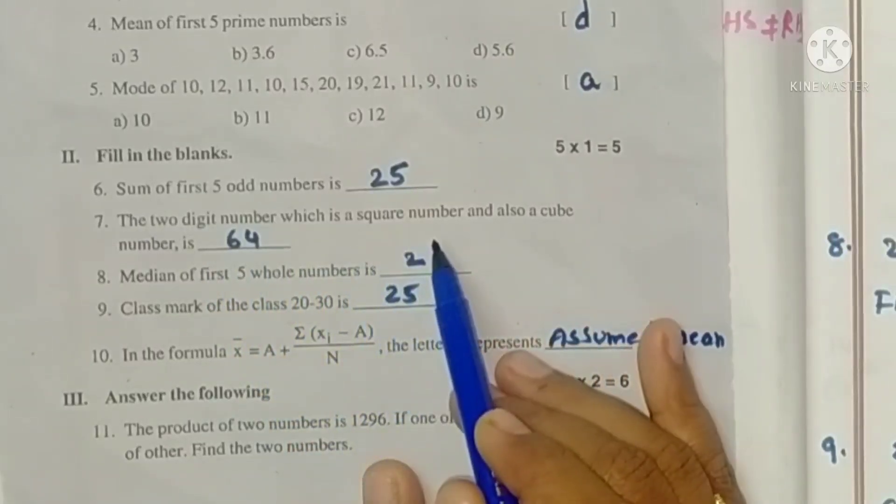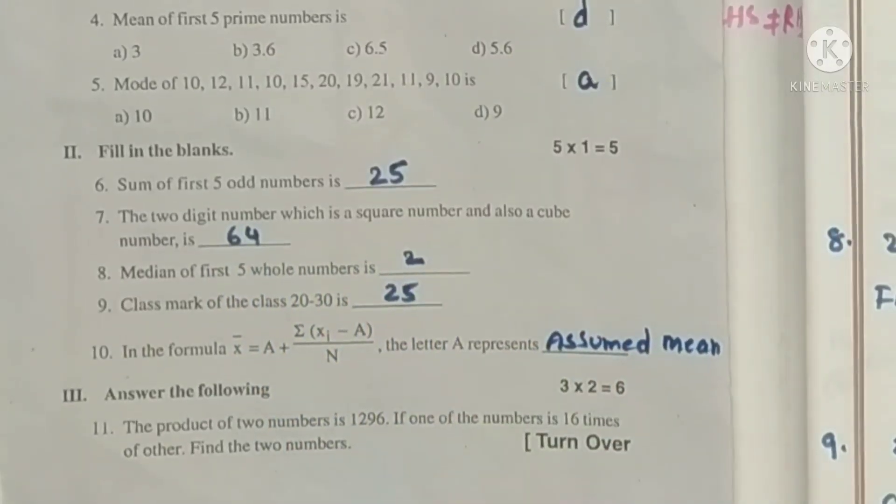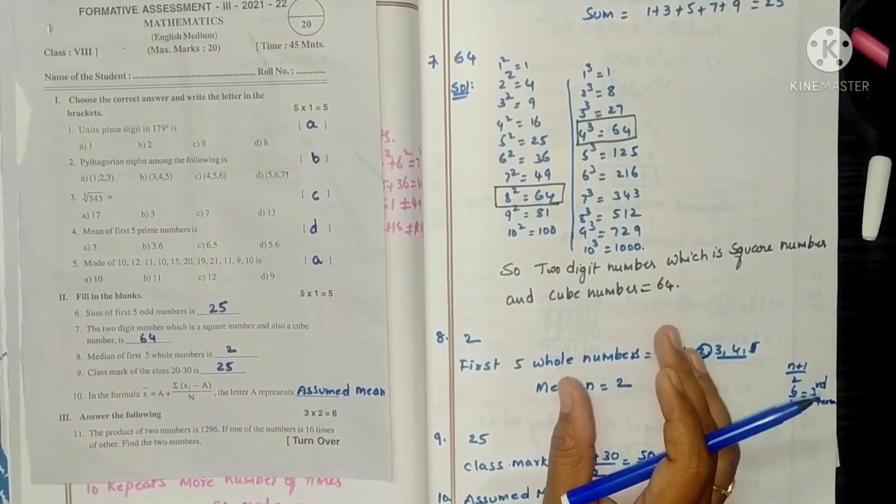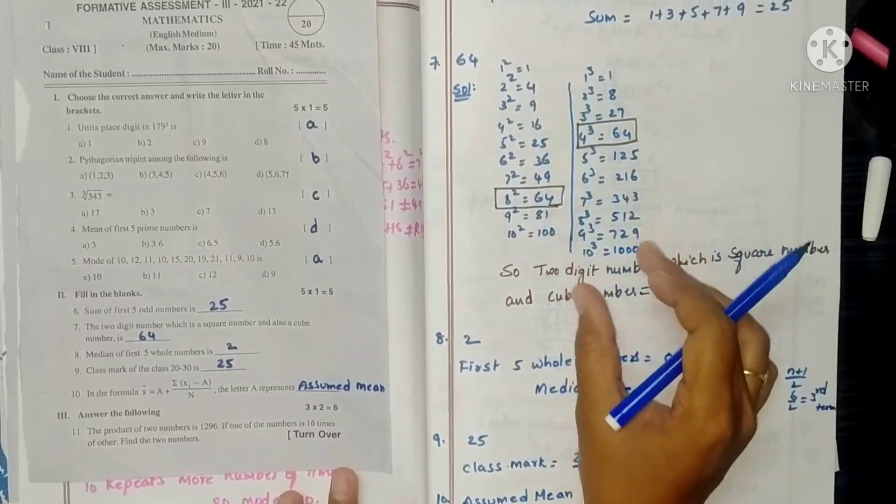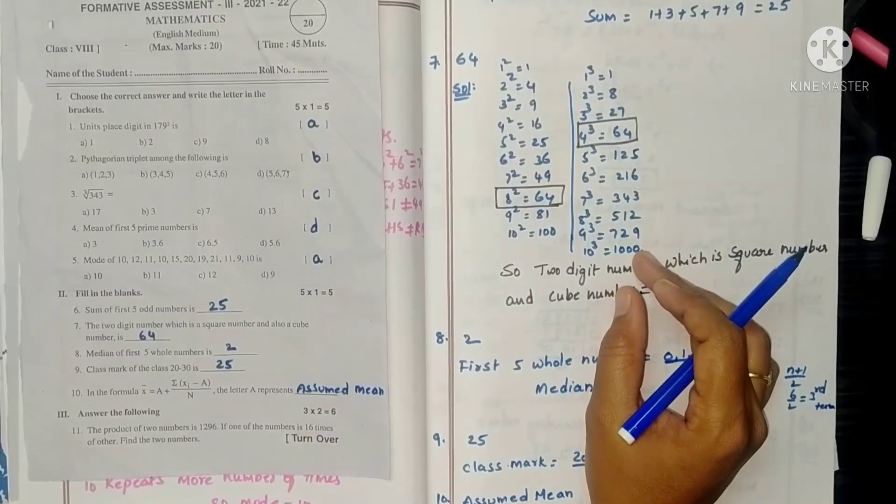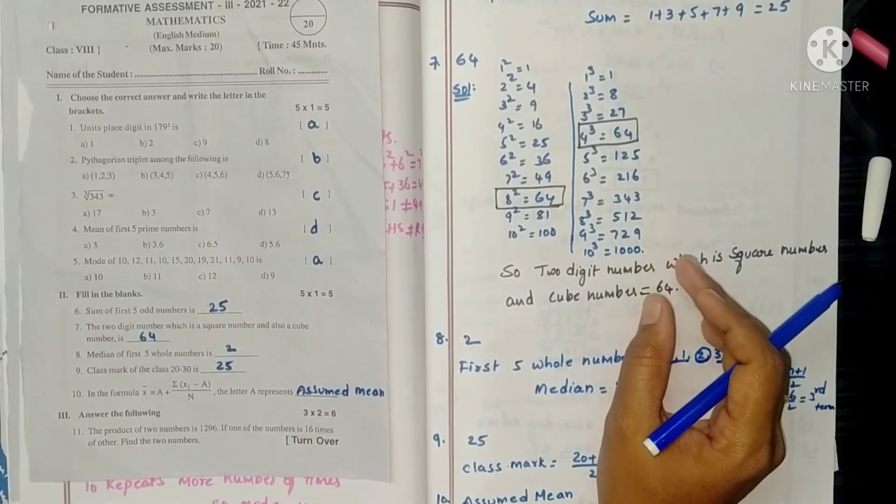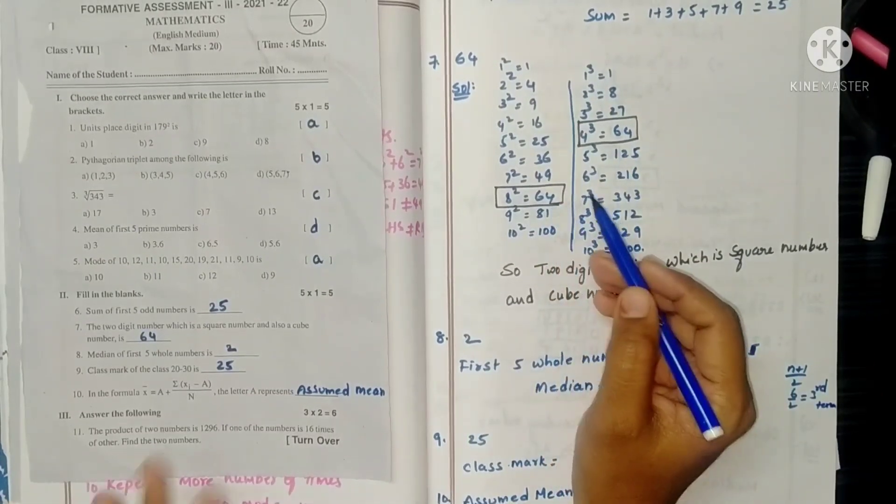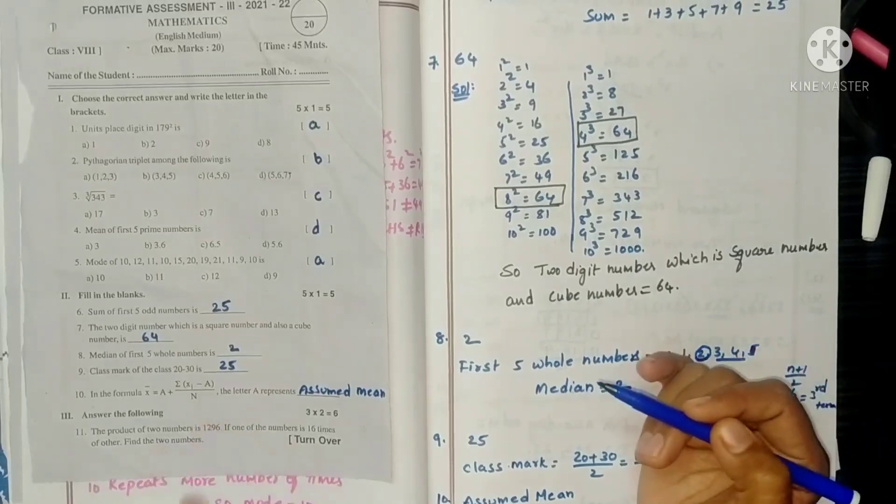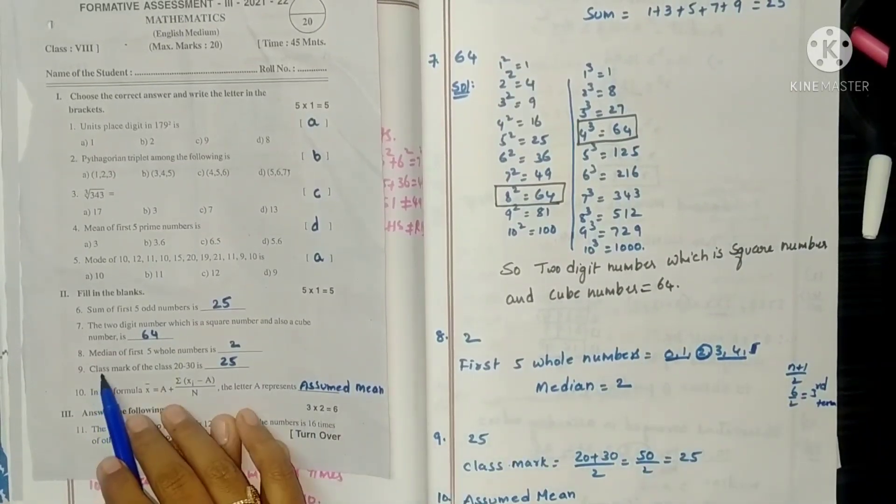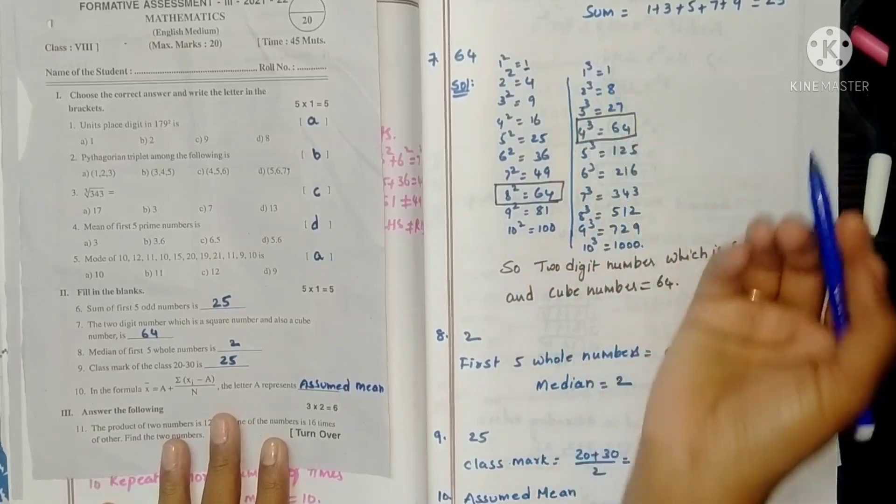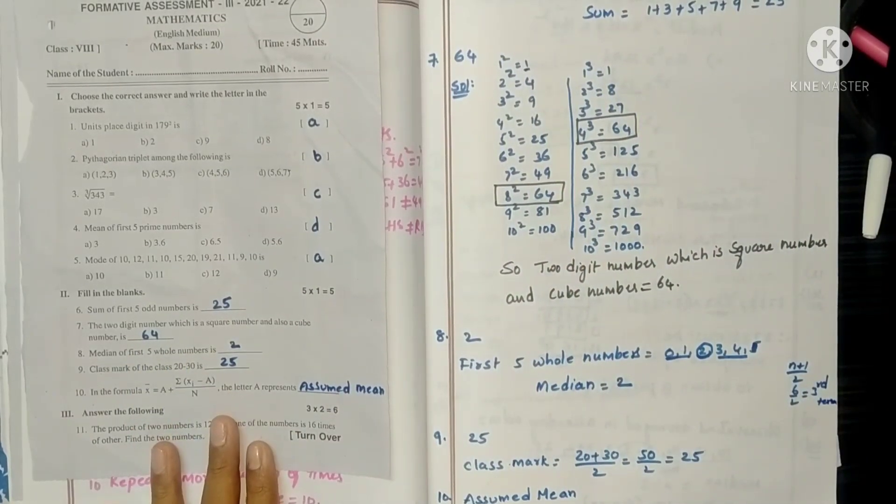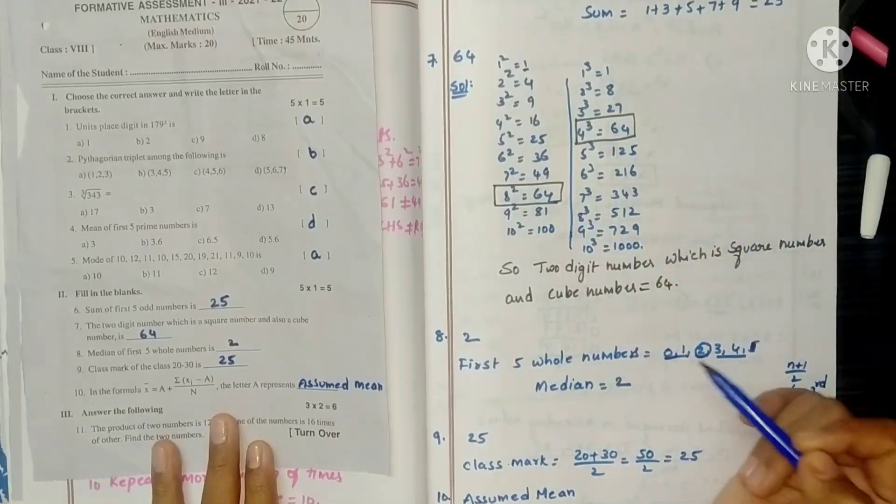The two digit number which is a square number and also a cube number. You need to think about this. You should know squares up to 10 and cubes up to 10. The common number in both is 64. Here the answer is 64.